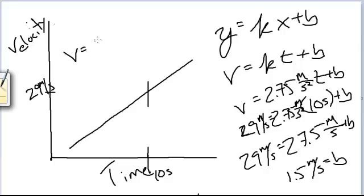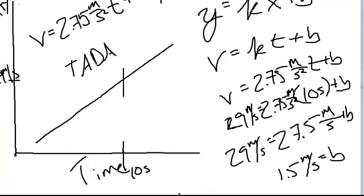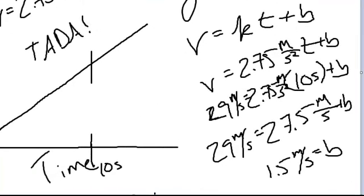Final thing to do. Plug in those k and b values into the original general equation. And ta-da! There is your specific equation.